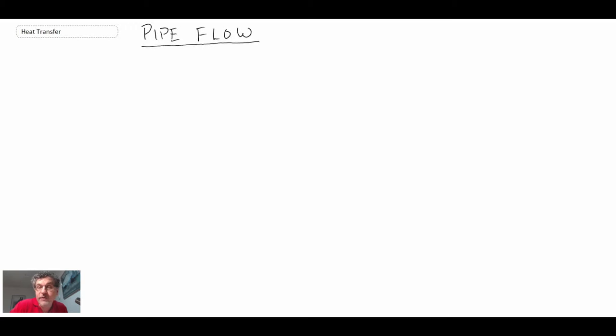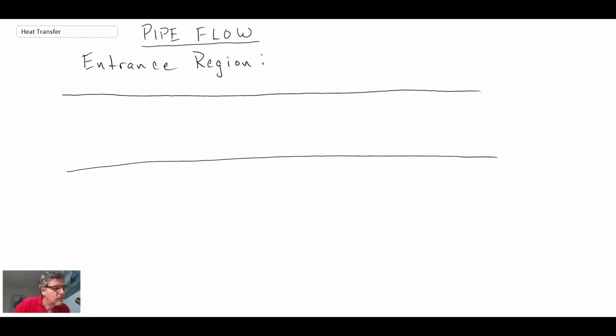Imagine if we have a long section of pipe as shown here, and if we could assume that the velocity coming into that pipe would be what we would call a uniform entrance region or a top hat profile. The velocity profile across the pipe cross section may look something like this.